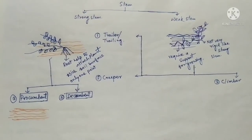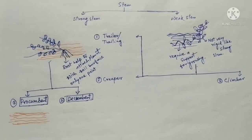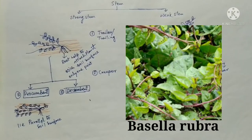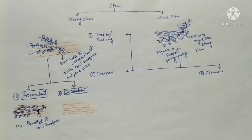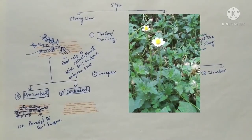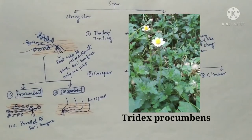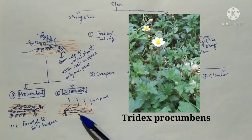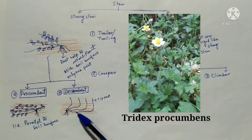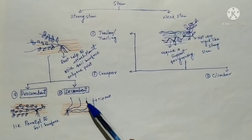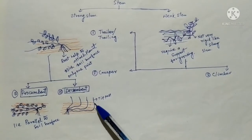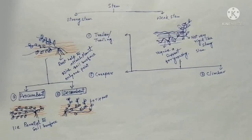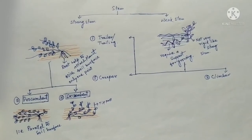When a weak stem lies parallel to the soil surface, it is considered procumbent. In the case of decumbent, all stems lie over the ground but their tip portion or apex part bends upwardly. All parts lie over the ground but the apex part bends upwardly. This is about the decumbent type stem.